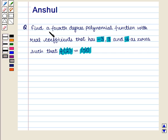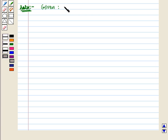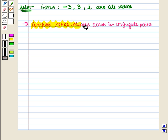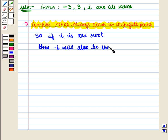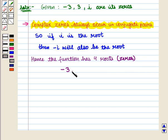In this question we have to find a fourth degree polynomial function with real coefficients, and we are given that minus 3, 3, and iota are its zeros. We know that complex zeros always occur in conjugate pairs, so if iota is a root then minus iota will also be a root. Hence the function has four roots or zeros: minus 3, 3, iota, and minus iota.